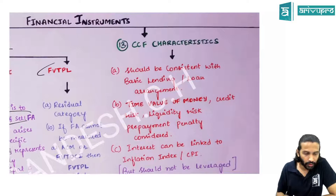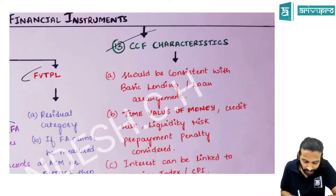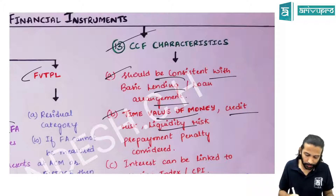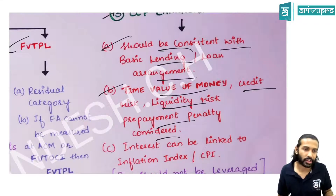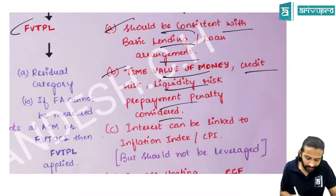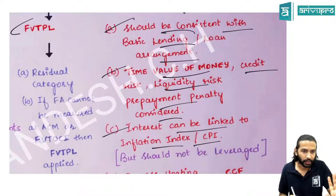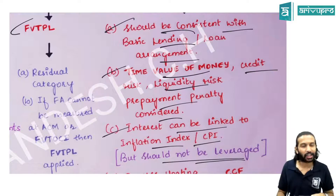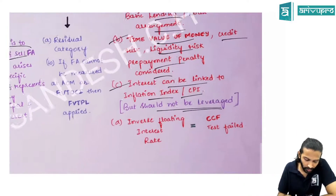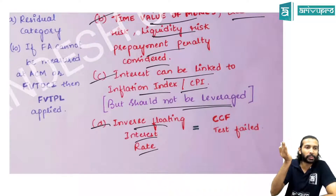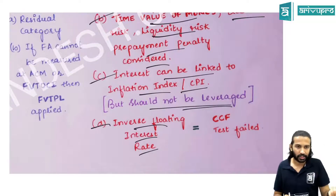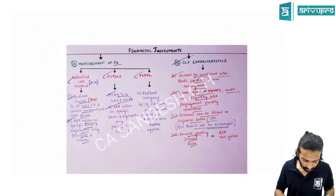CCF (contractual cash flow characteristics): the cash flows must be consistent with a basic lending arrangement. In a basic lending arrangement, you consider time value of money, credit risk, liquidity risk, and prepayment penalties. Anything outside this — like linking with an equity index or debt performance — fails the CCF test. Linking to an inflation index or CPI is fine if not leveraged. An inverse floating rate also fails the CCF test.